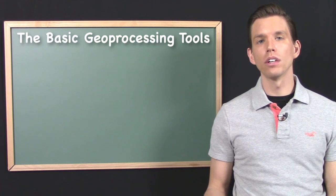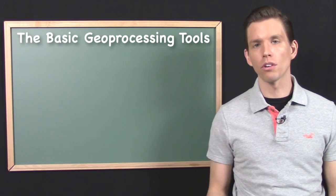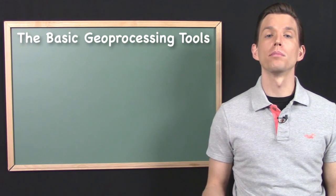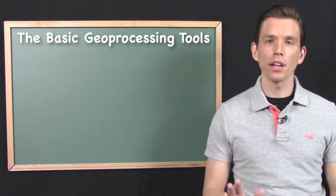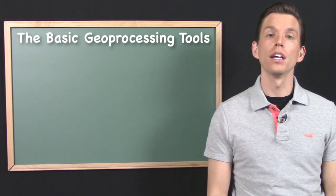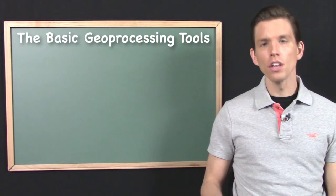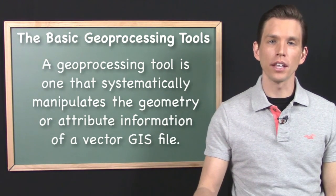I am a bit old school about what I consider to be a geoprocessing tool. Sometimes when you talk to people, they will say that geoprocessing tools are a bit more encompassing than the way I'm going to be using the term here. And that's fine, but I do want to give you a definition of exactly what a geoprocessing tool means to me and the way that we'll be using the term in this course. So a geoprocessing tool is one that systematically manipulates the geometry or the attribute information of a Vector GIS file.